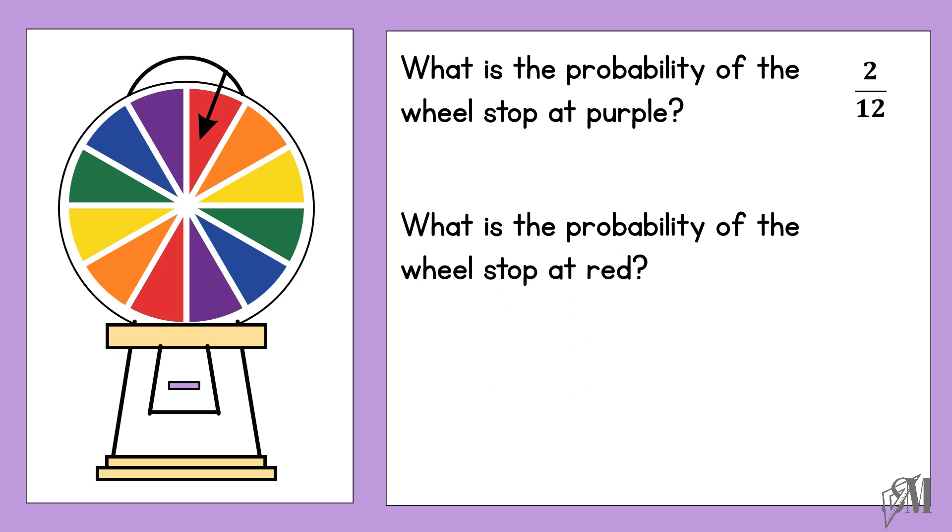What is the probability of the wheel stopping at red? And once again, there are 2 red parts in this circle. Therefore, the wheel will stop at red with a probability of 2 over 12.